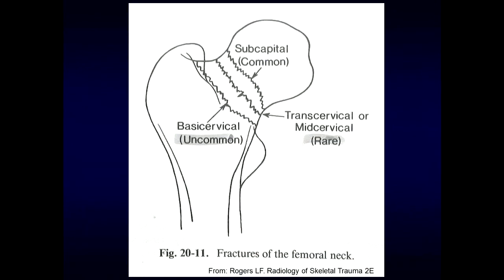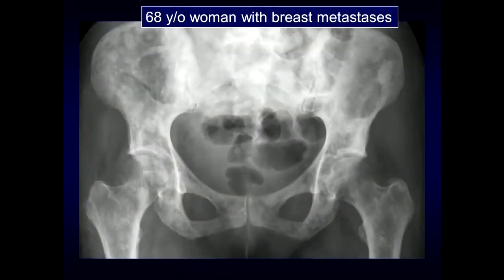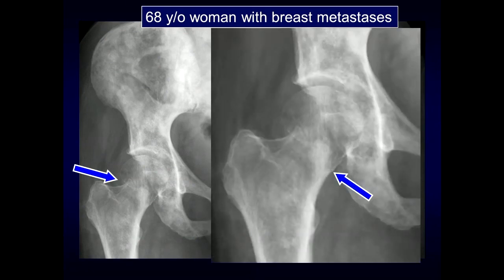The most common femoral neck fracture is the subcapital fracture. You can also have a transcervical or midcervical (rare) or a basicervical (uncommon). These femoral neck fractures can be very subtle — magnify and take a close look. In one patient, subtle offset is visible along the medial aspect of the femoral neck. In a 68-year-old woman with breast metastasis, there is subtle irregularity at the lateral aspect of the femoral head-neck junction, with the fracture extending to the medial aspect of the femoral neck.